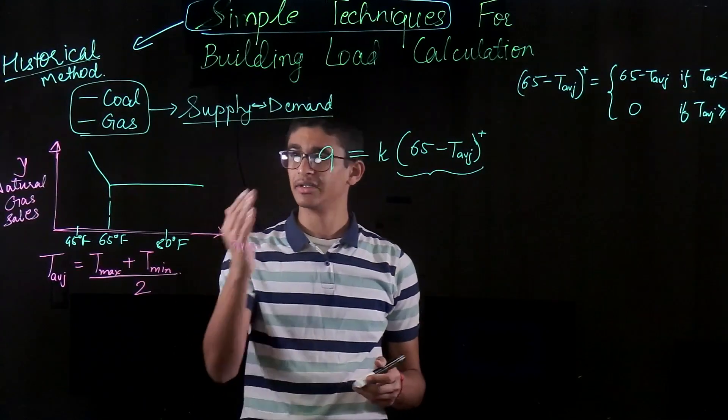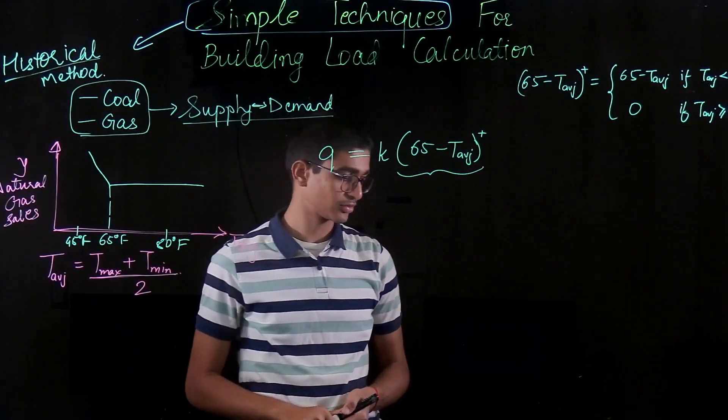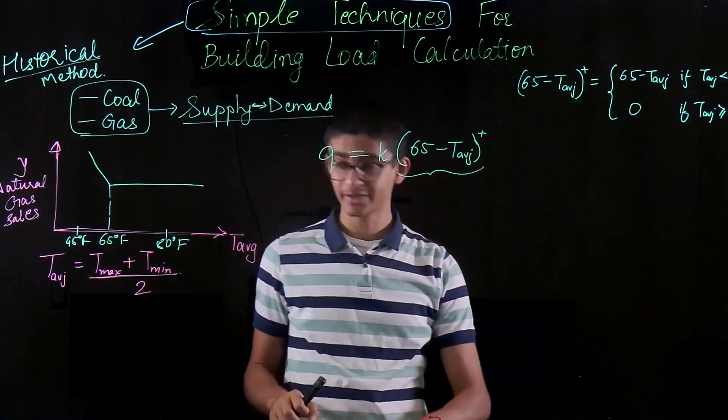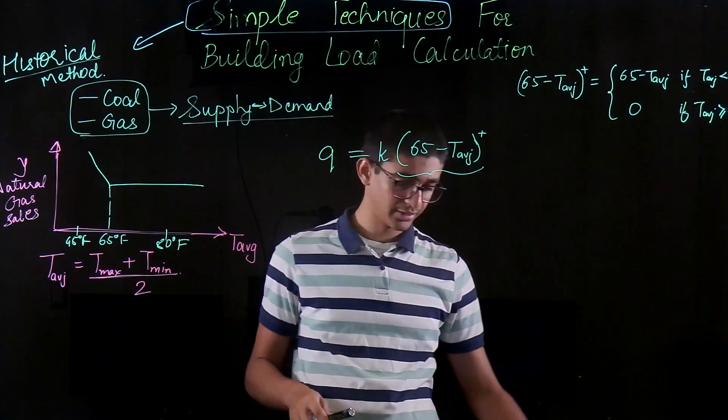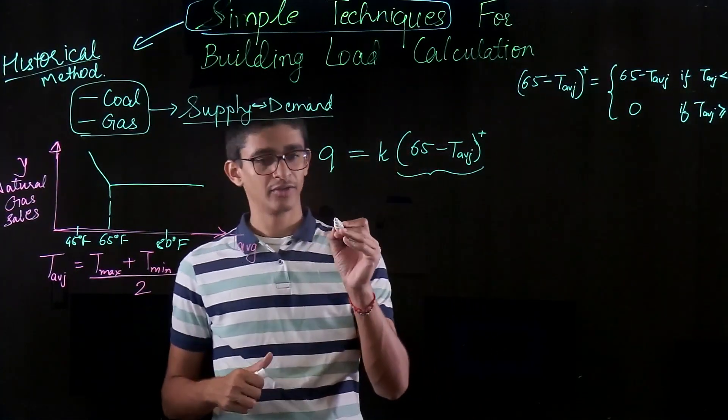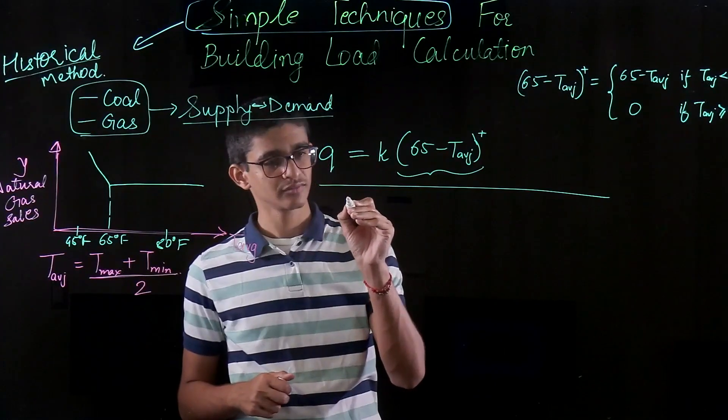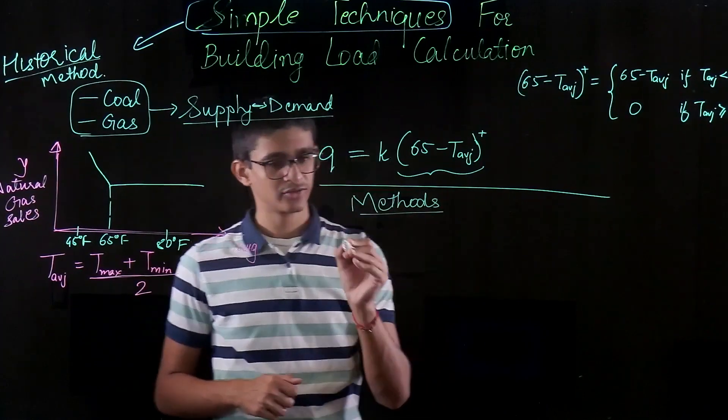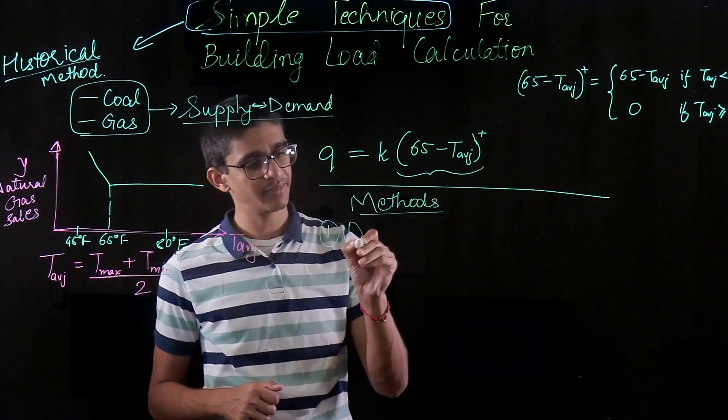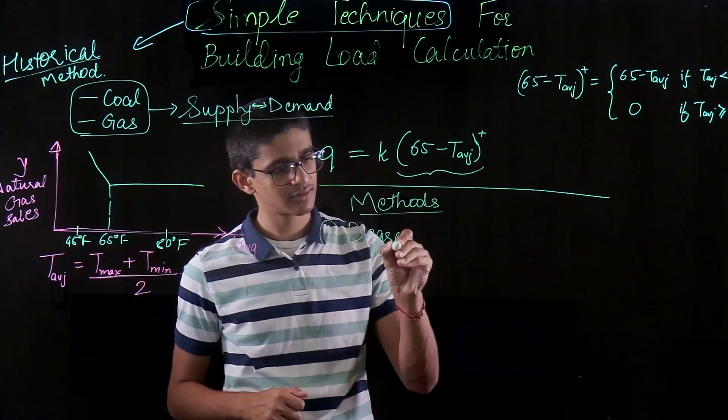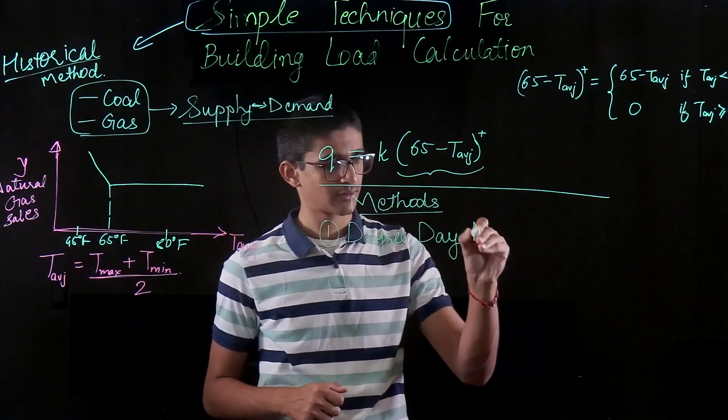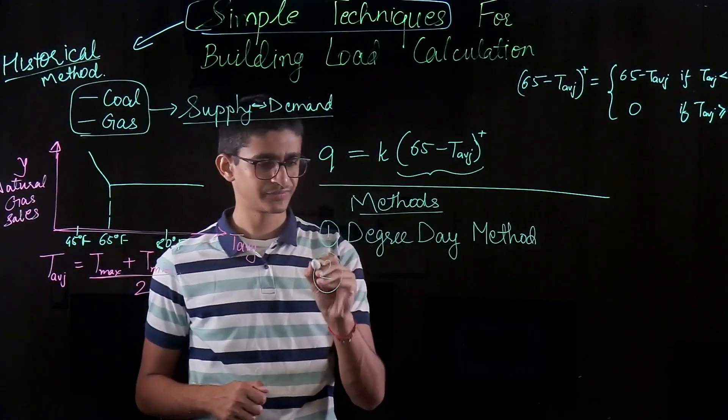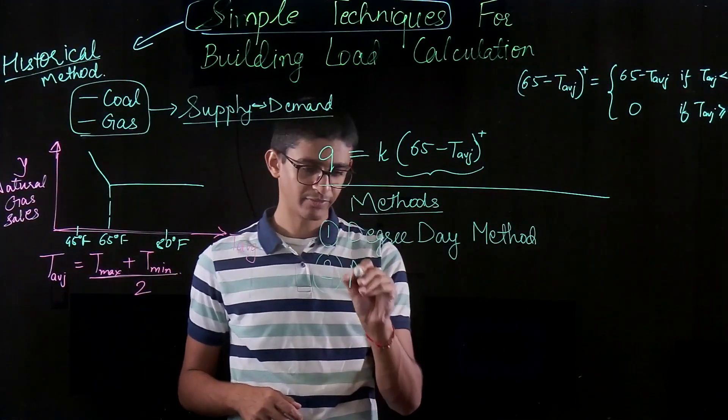And based on this analogy, they have defined four other methods to do the building load calculations. And these four methods will be discussed individually in the upcoming four videos. So the first method is Degree Day method. The second one is Modified Degree Day method.